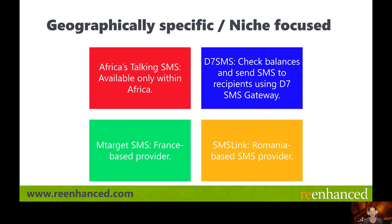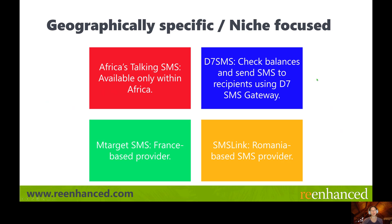Here are the four connectors that have a very specific geographic focus or niche. If you're in these countries or do business in that niche market, these might be great options for you. Africa's Talking SMS is only available to send SMS messages within the continent of Africa — it doesn't work anywhere else. MTarget SMS is for France, SMS Link is Romania. Finally, there's D7 SMS, which is super niche focused — if you are using a D7 SMS gateway, it has one action: lets you check balances and send SMS to recipients.